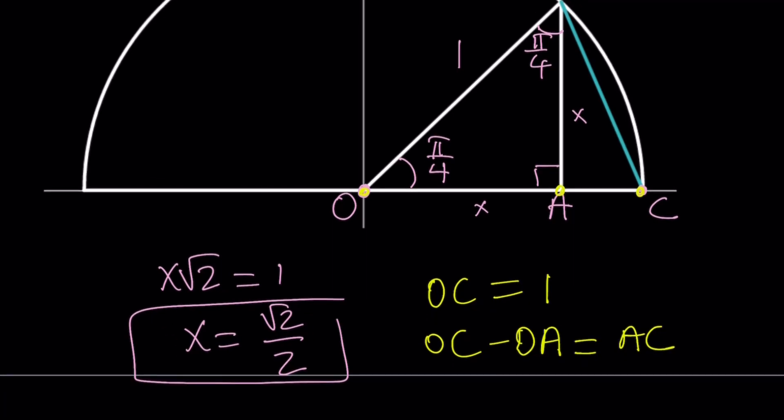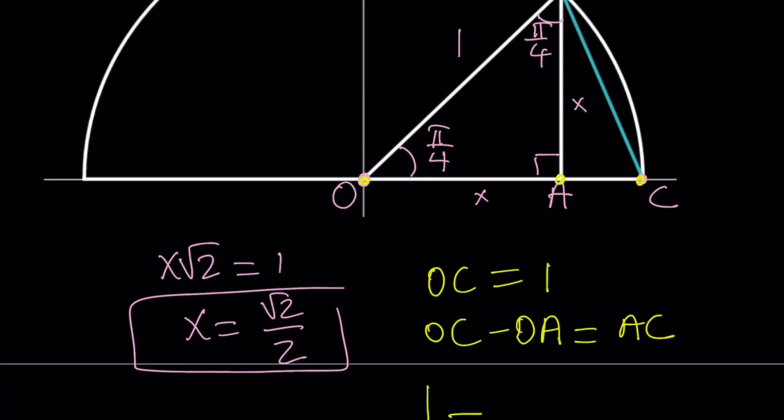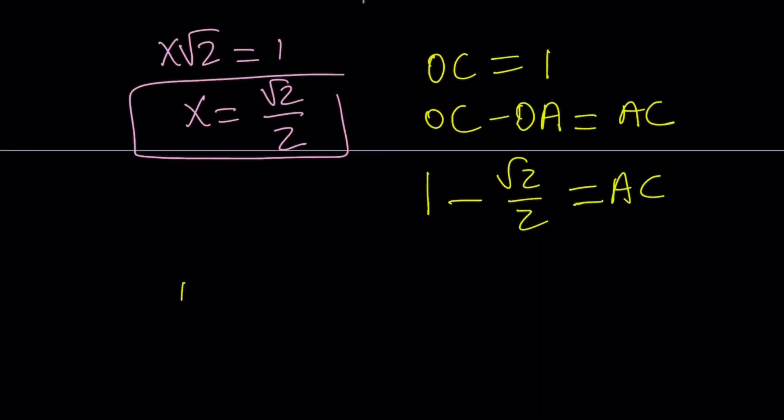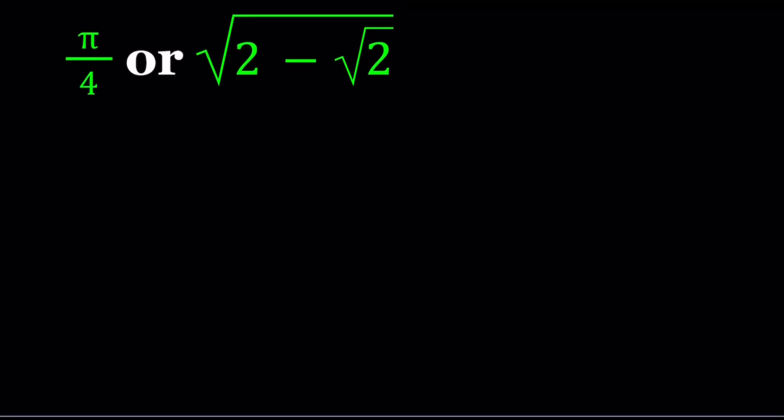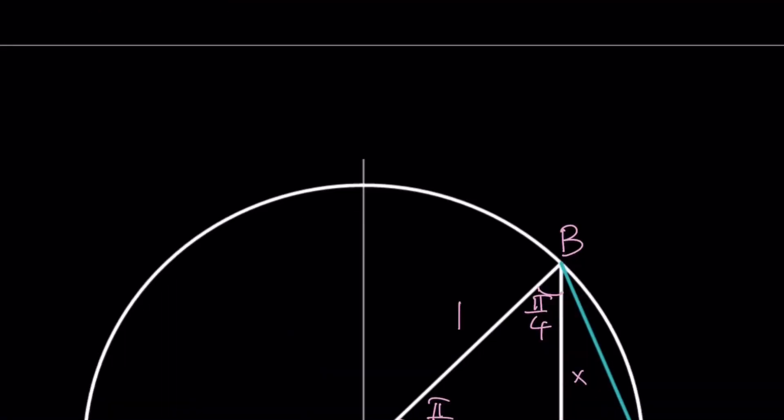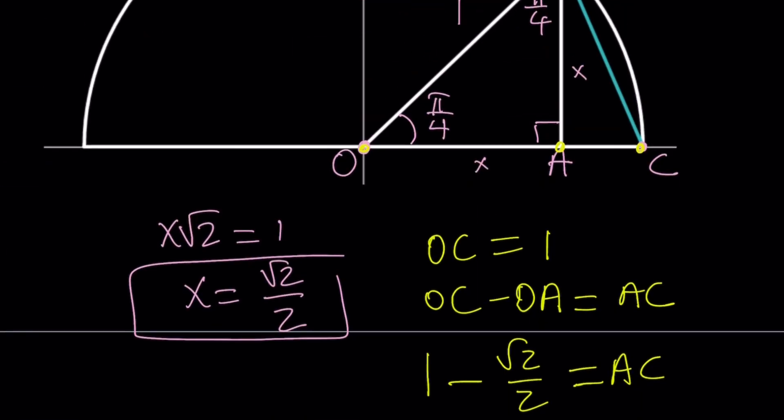So let's go ahead and subtract them. OC is 1. And what is OA? OA is X, which is √2/2. So that is AC. AC is 1 minus √2/2. Let's simplify this a little bit. 2 minus √2 over 2. So does that kind of ring a bell? Because remember, we were trying to compare the square root of 2 minus √2 with π/4. But we didn't get the square root. But no worries. We'll get there.